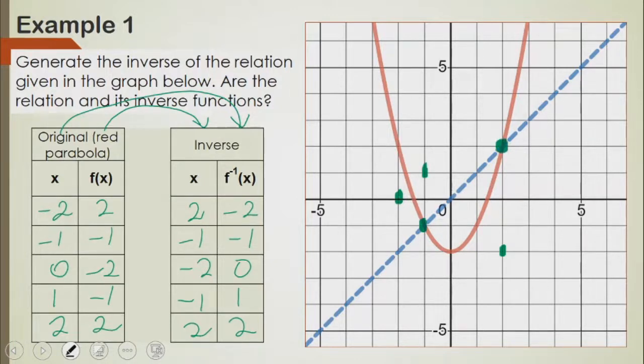Now we need to join these points. That might not be perfect, but you can see that the green is now the inverse of the red parabola.